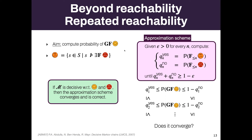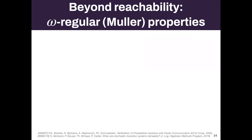It can go beyond reachability. For omega-regular properties we can also do interesting things. This was done by Abdulla, Bertrand, Rabinovich, and Schneebelen, focusing on lossy channel systems. What they propose essentially reduces to a decisive Markov chain approach.